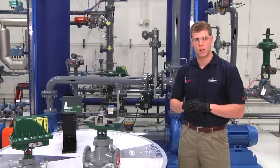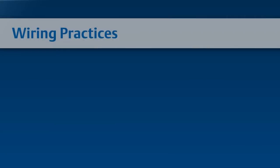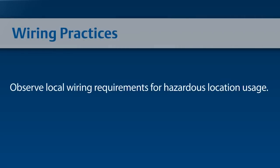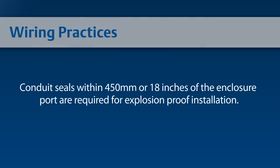Some other wiring practices to follow include: observe local wiring requirements for hazardous location usage. Conduit seals within 450 millimeters or 18 inches of the enclosure port are required for explosion proof installation.